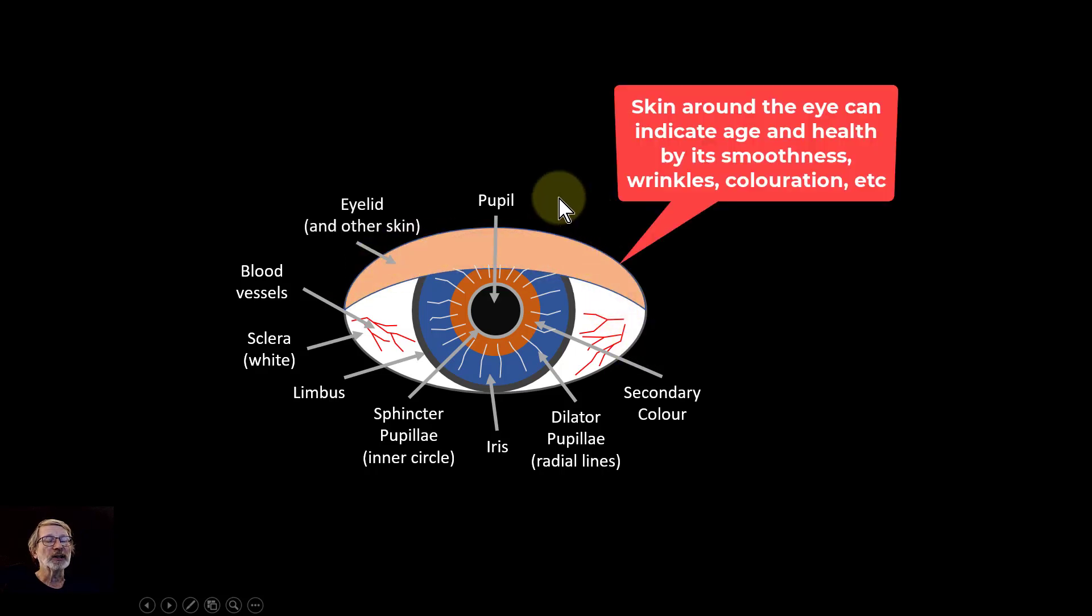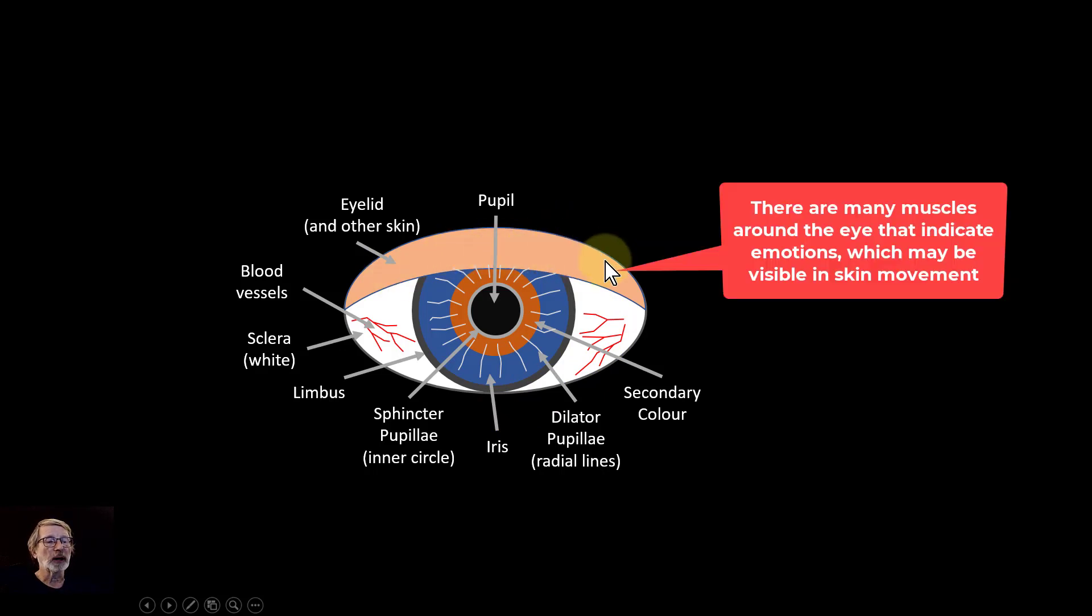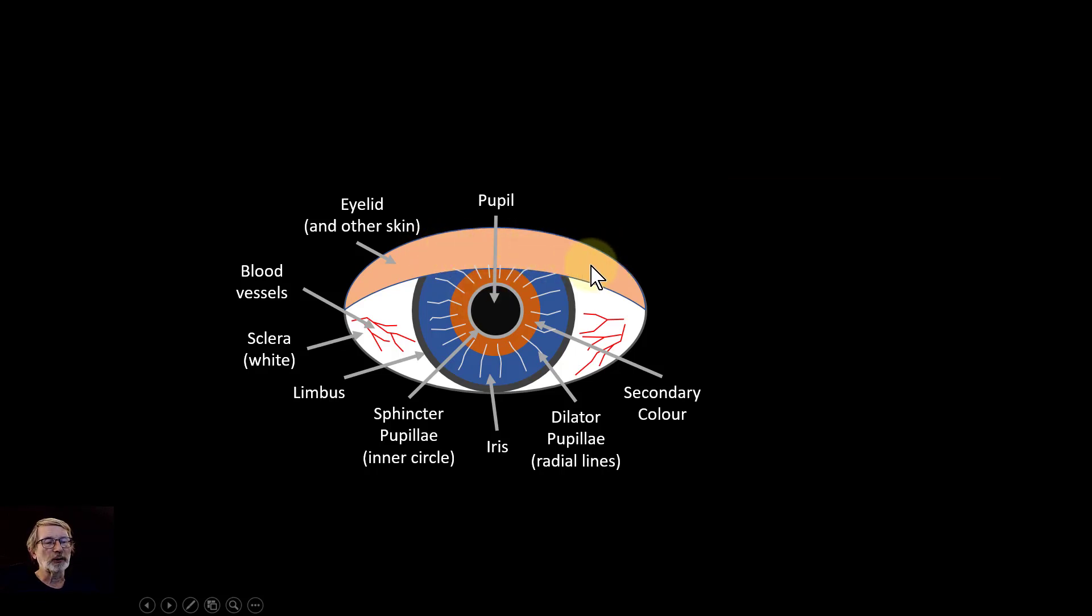The eyelid and this other skin around here tells us something about the eye. So this may be clean and clear and very simple, but it can also have lots of different colours in it. It can have wrinkles in it and so on. And generally the clarity of skin is an indicator of youth and health.